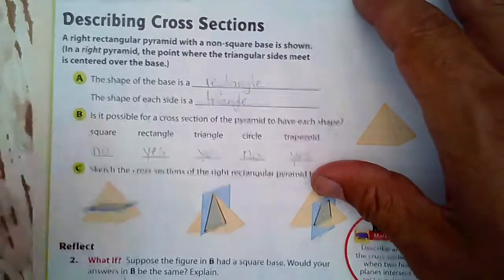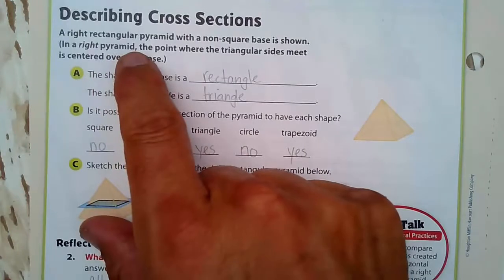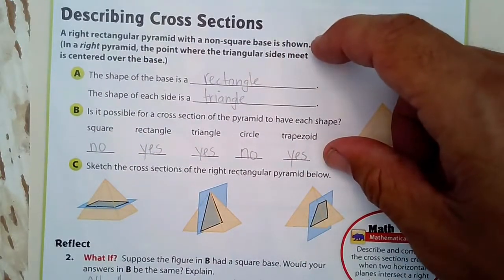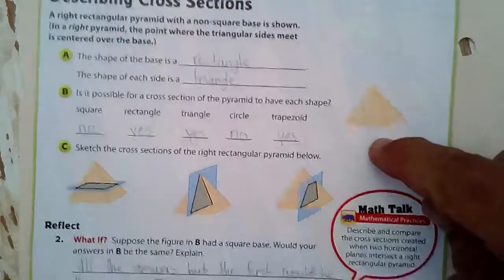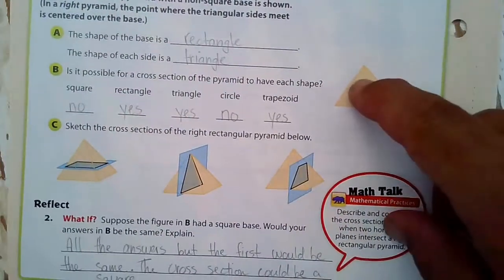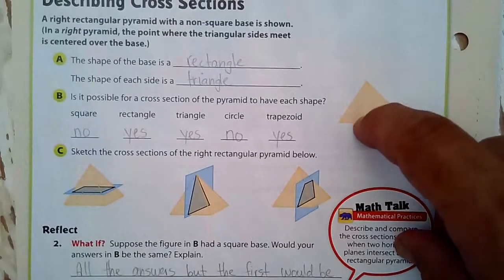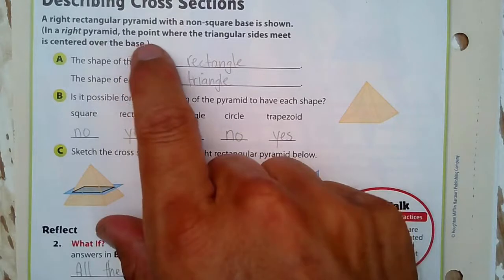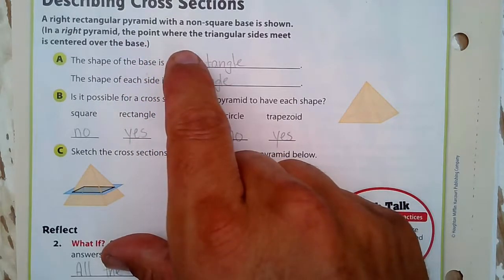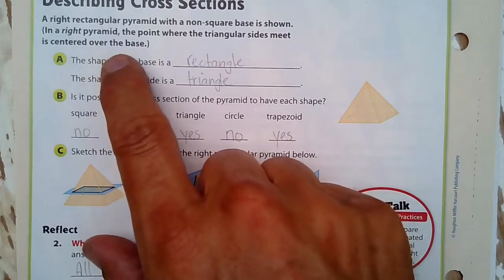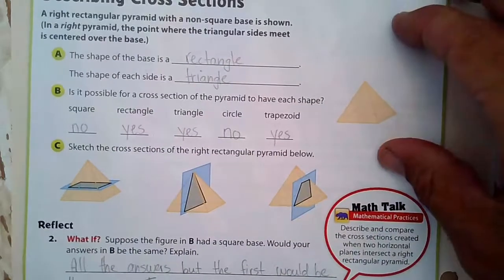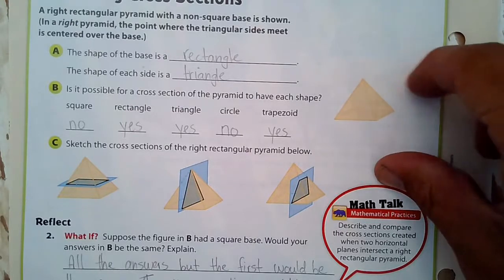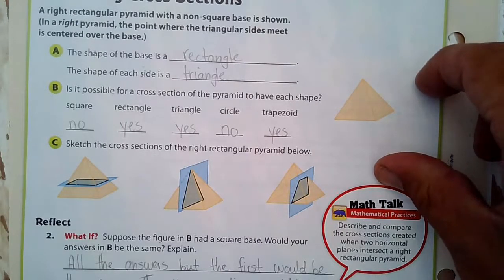Describing cross-sections. A right rectangular pyramid with a non-square base is shown. So the base, what it's sitting on in this case, is not a square. In a right pyramid, the point where the triangular sides meet is centered over the base, as opposed to this could be over here, off to the side.